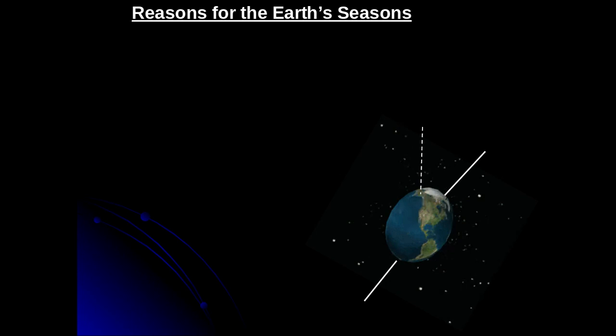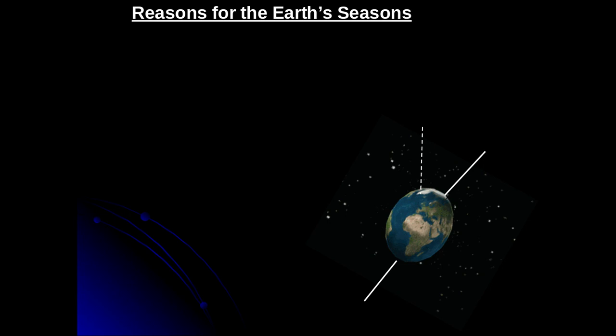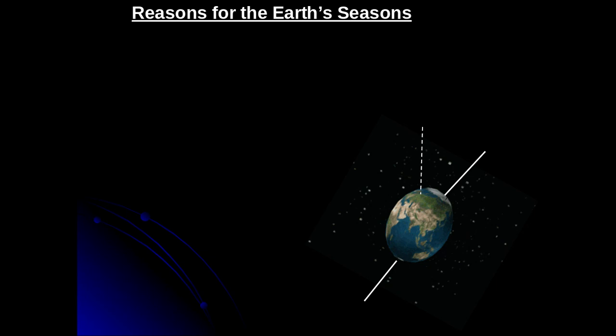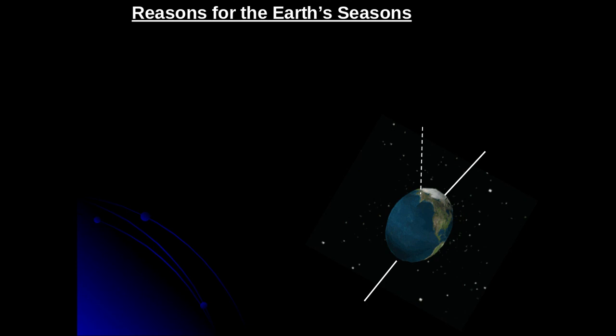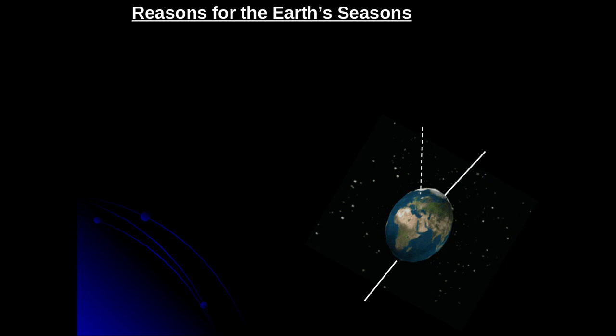Then we looked at Galileo discovering the telescope and being able to look at planets as three-dimensional surfaces. And then finally we looked at Isaac Newton, which kind of brought everything together and showed why Johannes Kepler's three laws of motion work because of gravity. So that was part one.